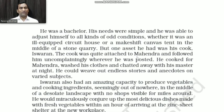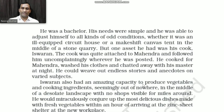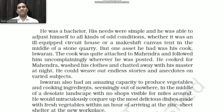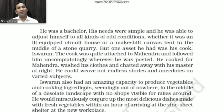Iswaran could weave out endless stories and anecdotes on varied subjects. He had an amazing capacity to produce vegetables and cooking ingredients seemingly out of nowhere, even in the middle of a desolate landscape with no shops visible for miles around. Wherever Iswaran went, he would grow vegetables and cook tasty dishes for his master.